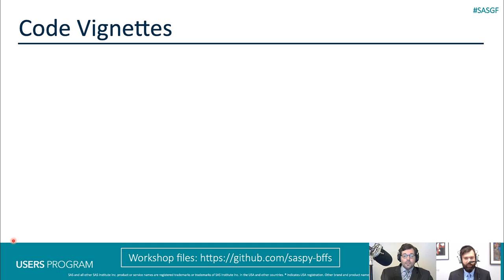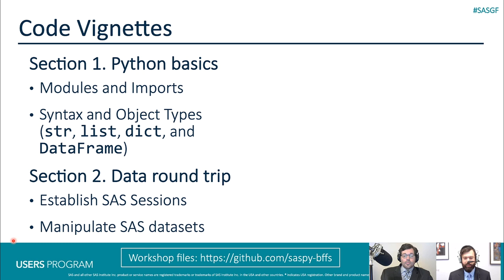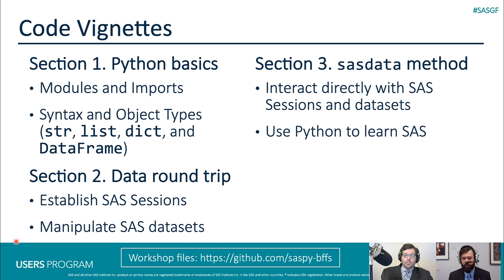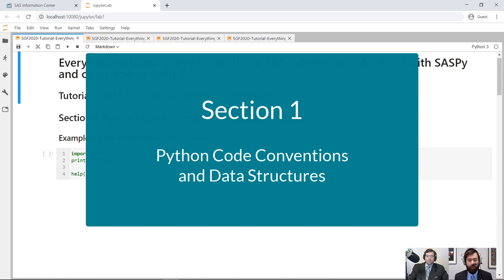In order to demonstrate these principles, we're going to take you through a series of code vignettes. First we're going to teach you the basics of Python — introduce you to Python modules and imports, as well as basic Python syntax and object types. Then we're going to take your data on a round trip, importing a SAS data set into Python, doing some data manipulation, and then exporting it back to your SAS session. Then we'll introduce you to the SAS data method, which allows you to interact with SAS data sets where they live on disk using Python syntax. And we'll also show you how Python can be used as a scripting language to imitate the SAS macro facility. This is section one: Python code conventions and data structures.